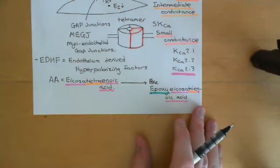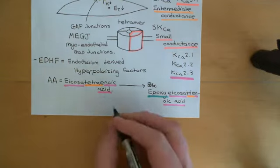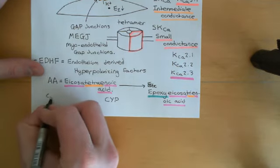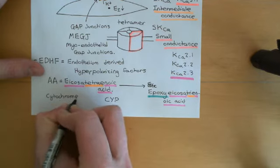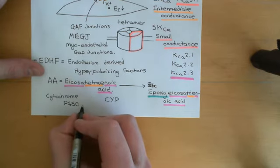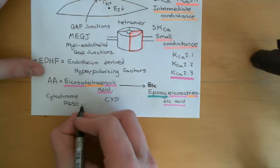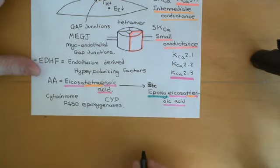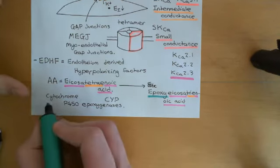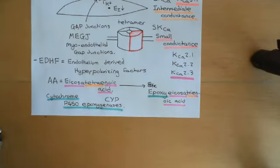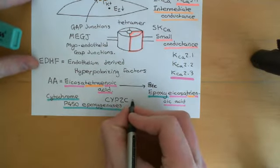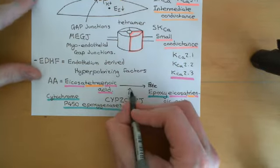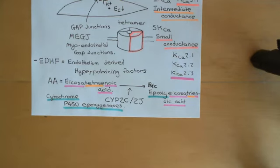There are enzymes within the endothelial cells which can also catalyze this conversion of arachidonic acid, and they are members of the cytochrome P450 family of enzymes, often abbreviated to CYP — CY for cytochrome, P for P450. This reaction is specifically catalyzed by cytochrome P450 epoxygenases. The specific families which can catalyze this reaction are the cytochrome P450 2C family and also the cytochrome P450 2J family.